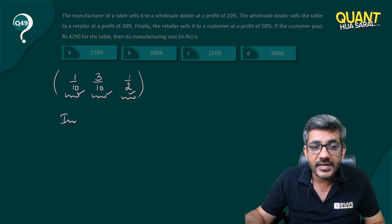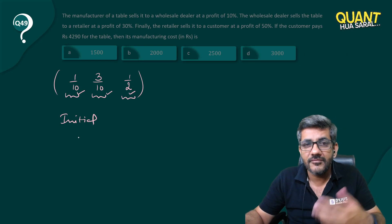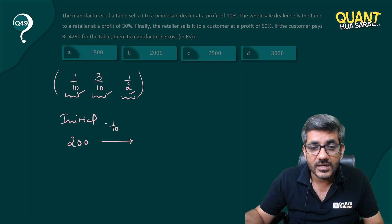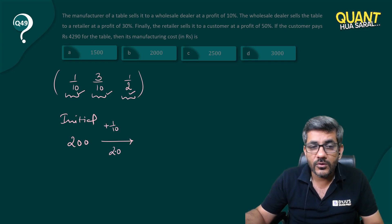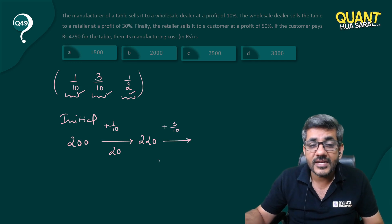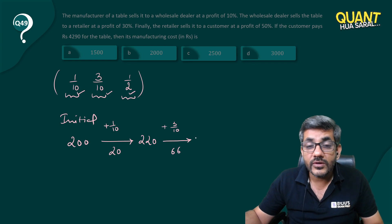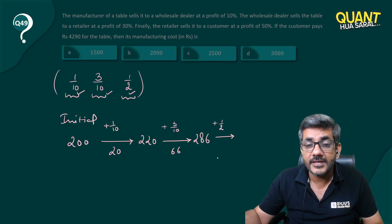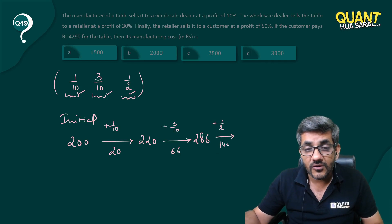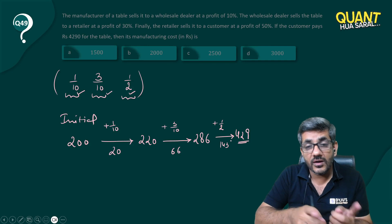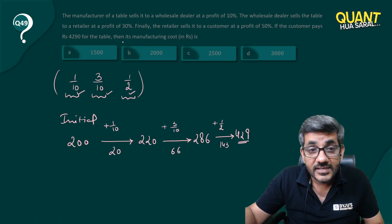Let us say the initial manufacturing price is rupees 200 — a multiple of 10, 10, and 2. He sells it at a profit of 1/10, so 1/10 of 200 is 20; adding that gives 220. He then sells at a profit of 3/10: 3/10 of 220 is 66, so he sells it for 286. Finally, this person sells at a profit of 1/2: 1/2 of 286 is 143, so he sells it for 429.